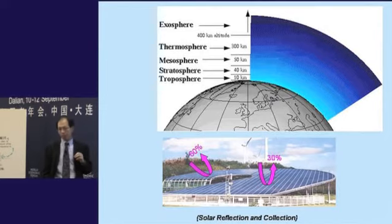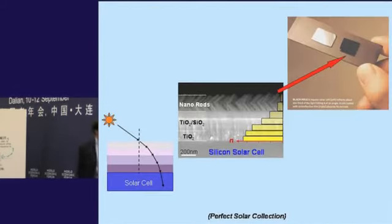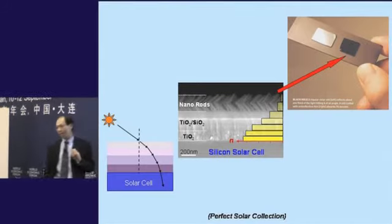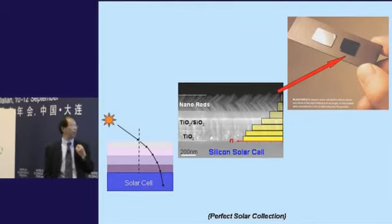We can manage that with the proper nanostructures by creating a gradient again of material density to change the flow of light as well. In the process, we're able to capture about 97% to 98% of the full spectrum of sunlight.